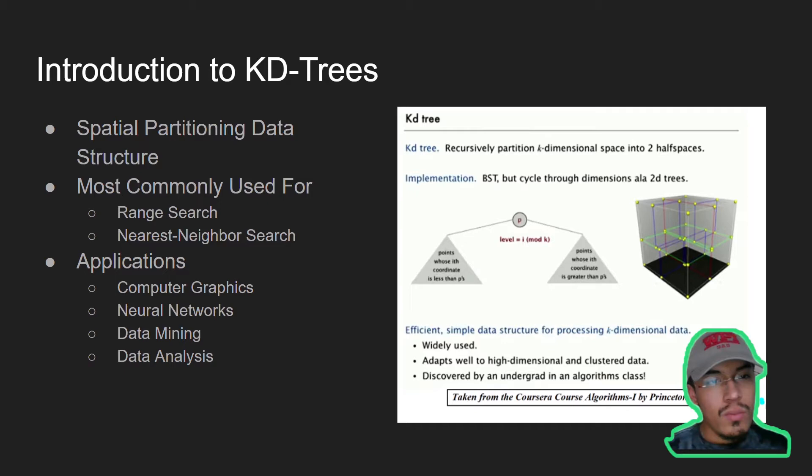The first one is the range search that searches for a point within the queried region. The second is the nearest neighbor search in which the closest neighbor to a point is found using spatial deconstruction. These algorithms along with the data structure allow them to be applied into computer graphics, neural networks, data mining and data analysis.